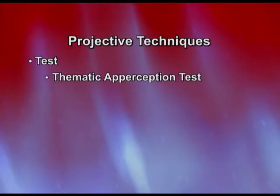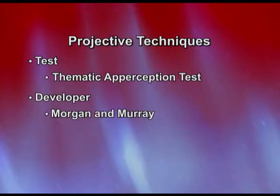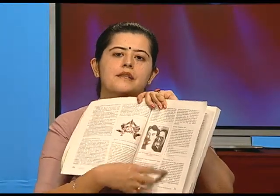The second test is TAT — Thematic Apperception Test, developed by Morgan and Murray. Thematic means we understand the themes. When the participant is shown a card, a theme is being identified and the participant is expected to write a story based on that picture, addressing four questions: What is happening in this picture? What led up to the picture? What are the characters thinking and feeling? And what do you think is the future outcome of this particular situation? Based on these four questions, the participant develops a story.